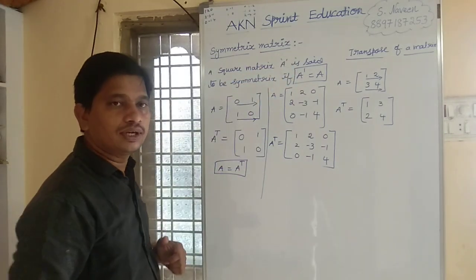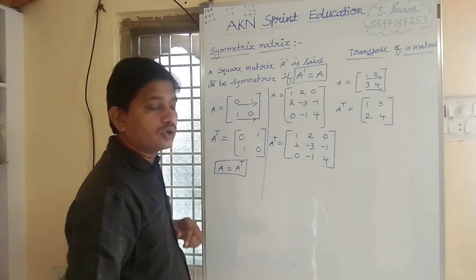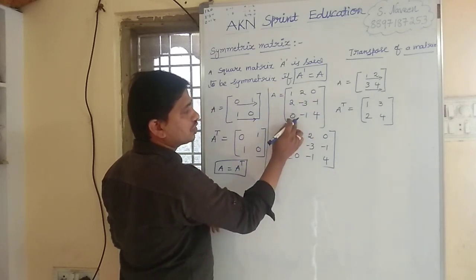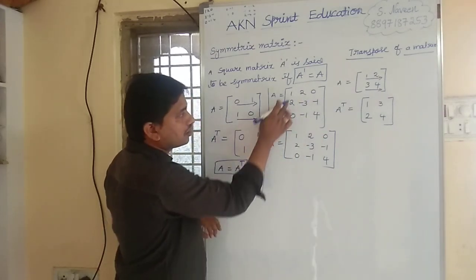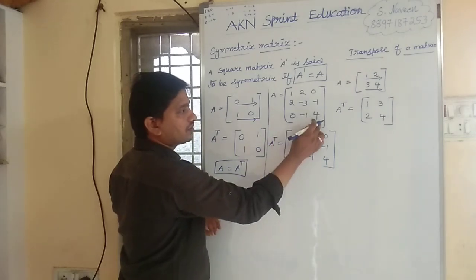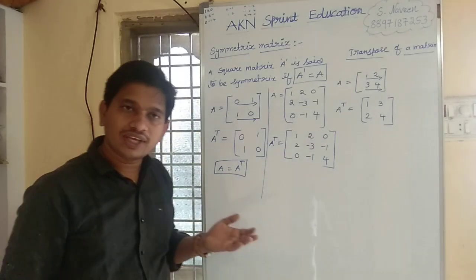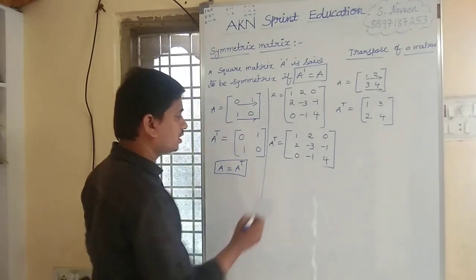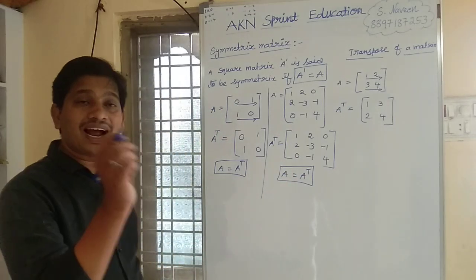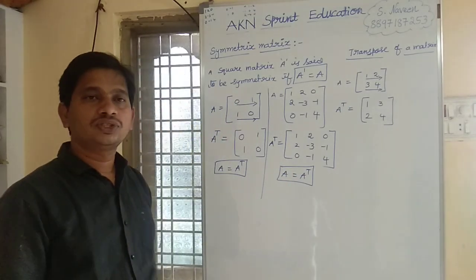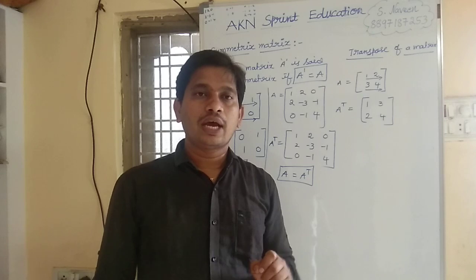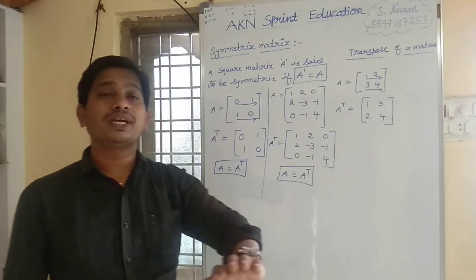That is called the transpose of the matrix — changing rows into columns and columns into rows. If you observe, matrix A is 1, 2, 0 / 2, minus 3, minus 1 / 0, minus 1, 4. And A transpose is also 1, 2, 0 / 2, minus 3, minus 1 / 0, minus 1, 4. Both are the same, so A equals A transpose, meaning this matrix is symmetric.